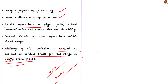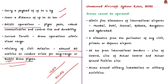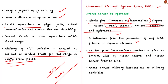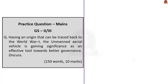From an exam perspective, the Unmanned Aircraft System Rules of 2021 mention that a drone cannot be operated within 5 kilometers of international airports at Mumbai, Delhi, Chennai, Kolkata, Bangalore and Hyderabad, and at a distance of 3 kilometers from the perimeter of any civil, private or defense airport. These drones cannot be flown within 25 kilometers from international borders, including the Line of Control (LOC), Line of Actual Control (LAC), and Actual Ground Position Line (AGPL). Areas around military installations or where military activities take place are also prohibited for drone flights unless clearance is obtained from the local military facility.